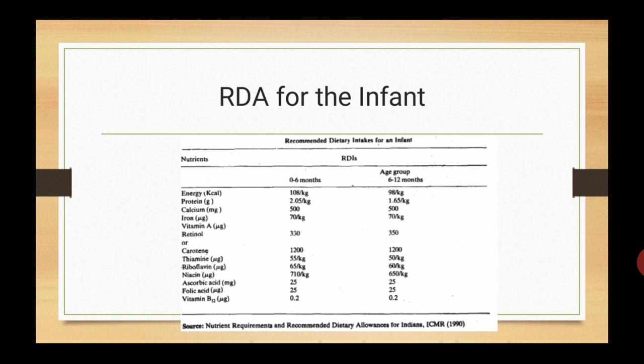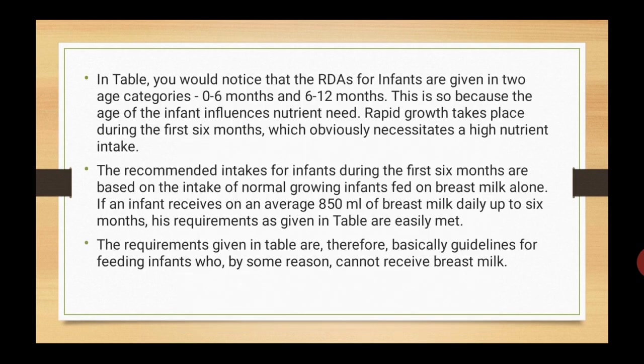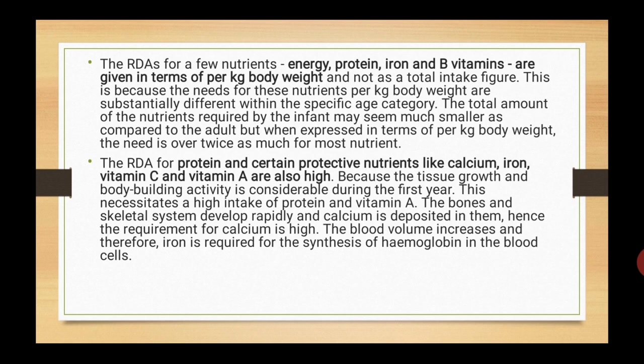Next is RDA for the infant. In this table, you will notice that RDAs are given in two categories, i.e. 0 to 6 months and 6 to 12 months. This is because the age of the infant influences nutrient need. During the first 6 months, speedy growth takes place, which necessitates a high nutrient intake. The requirements given in the table for 0 to 6 months are basically guidelines for feeding infants who by some reason cannot receive breast milk. RDAs for energy, protein, iron, and B vitamins are given in terms of per kg body weight.